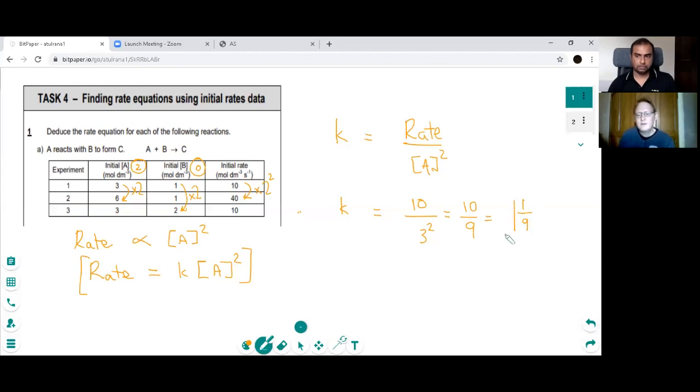And then we need to find the units. So instead of putting numbers in the equation, we'll put the units. So the units of rate are moles per decimetre cubed per second. And the units of concentration are moles per decimetre cubed squared. So we'll put in another moles per decimetre cubed.